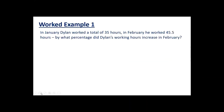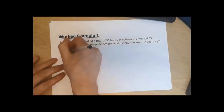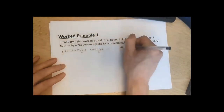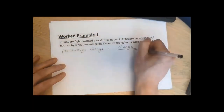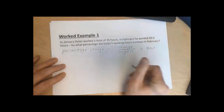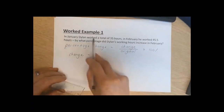Here's our first example. In January, Dylan worked a total of 35 hours. In February he worked 45.5 hours. By what percentage did Dylan's working hours increase in February? Let's work through Example 1. Put our equation down first: percentage change equals the change divided by the original, or start number, times by 100.